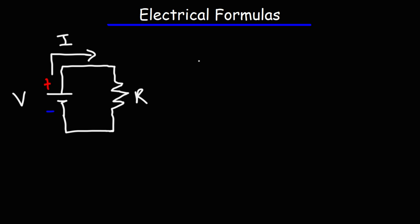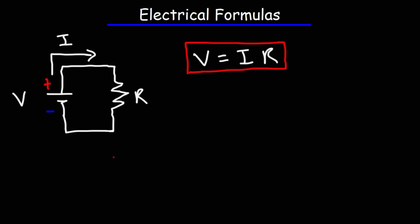The first formula you need to be familiar with is Ohm's law, which relates voltage to current and resistance: V equals IR. V is the voltage measured in volts, I is the current measured in amps, and the resistance is measured in ohms.